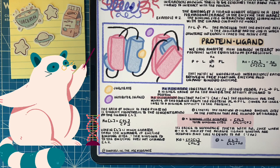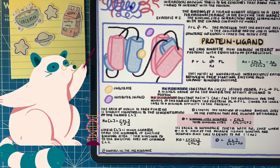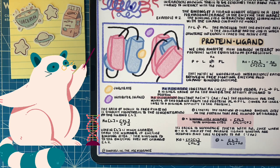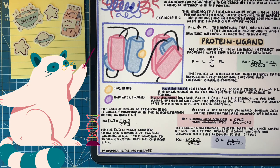For the forward reaction, we have the association constant Ka, which represents the likelihood of the ligand interacting with the protein to form the product. And the KD, or the reverse reaction — the dissociation constant — means that a smaller KD value indicates that ligand has a higher affinity for that protein.